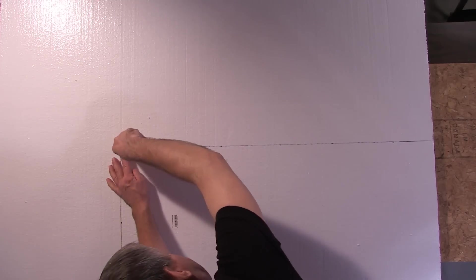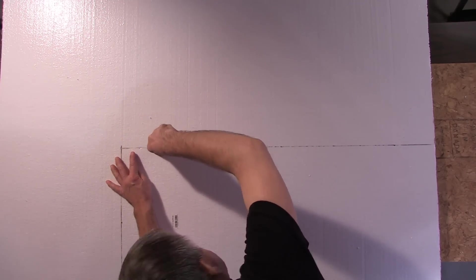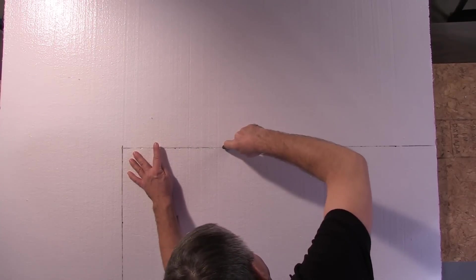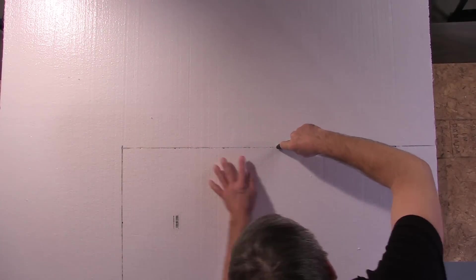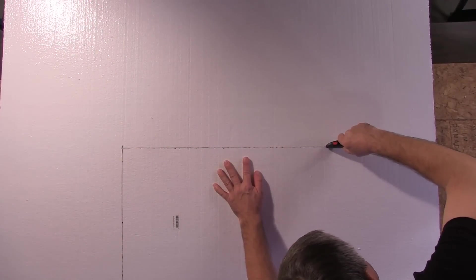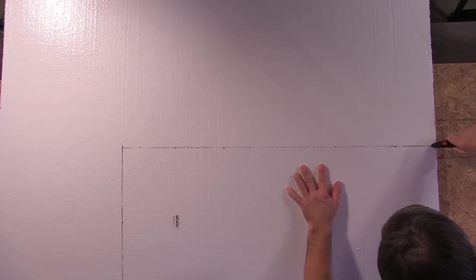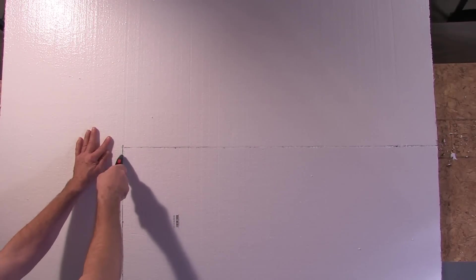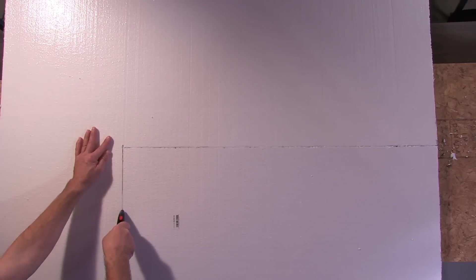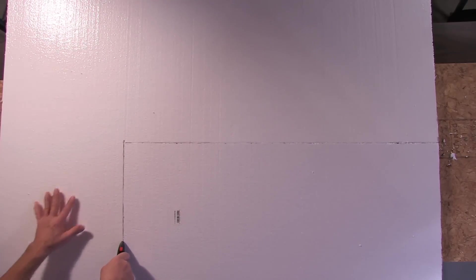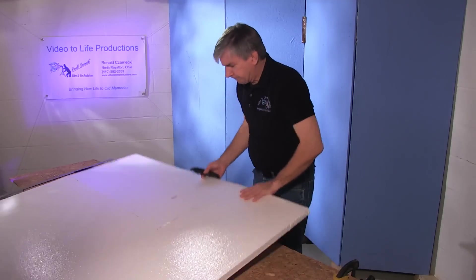Here's where a sharp knife comes in handy, because a dull blade will end up tearing the foam. Make sure your blade goes all the way down to the bottom. That's why it's good to have a nice piece of plywood on the other side, so you can press hard.